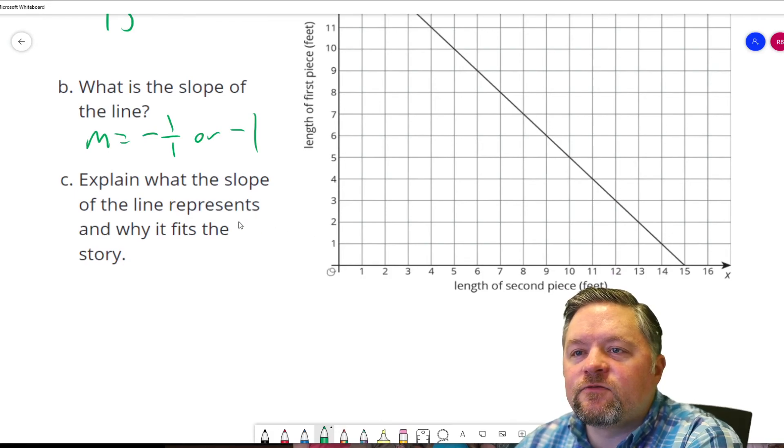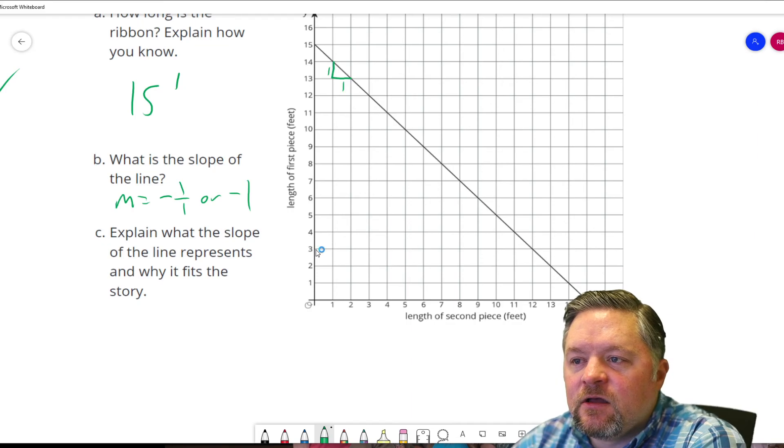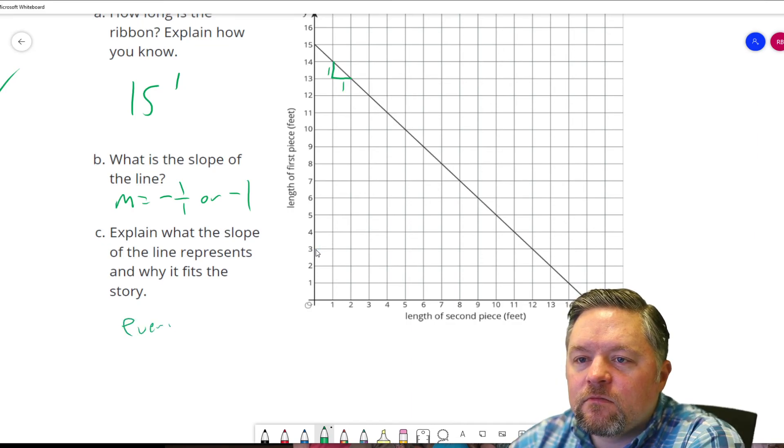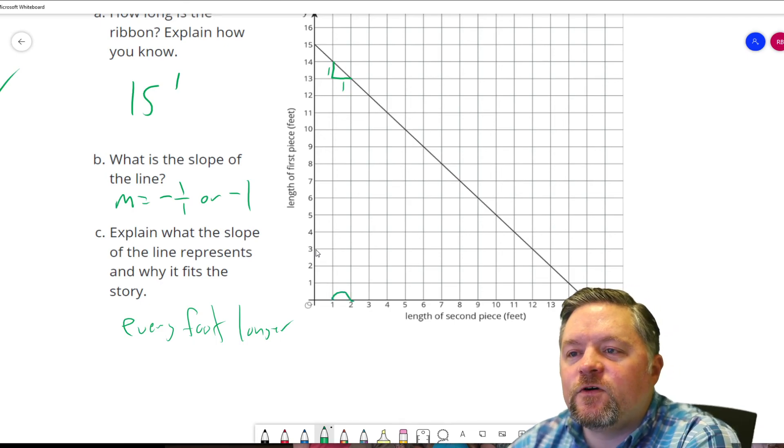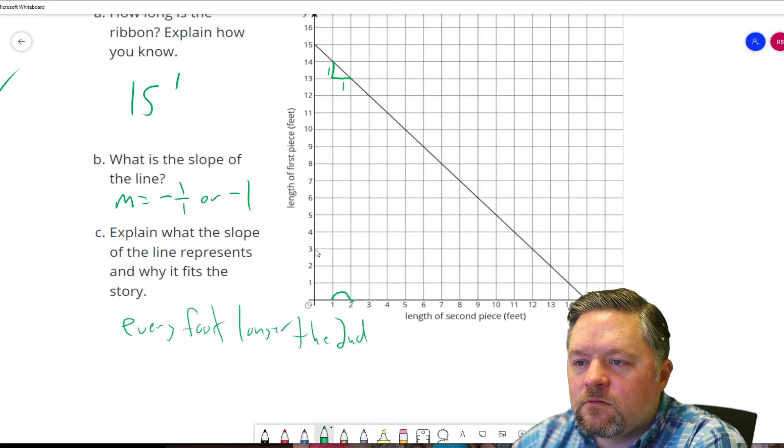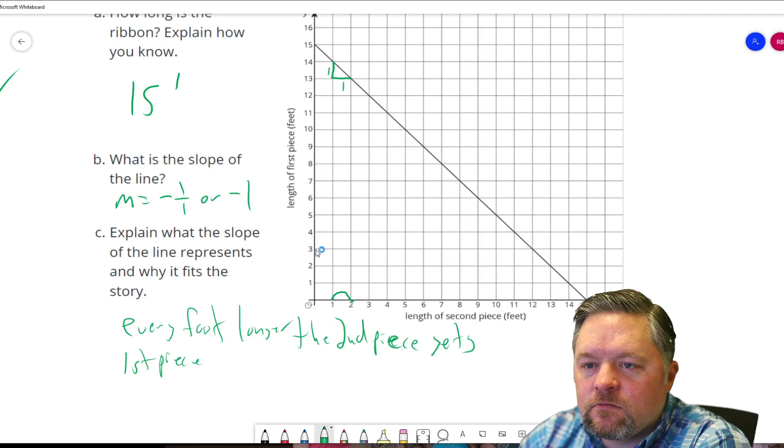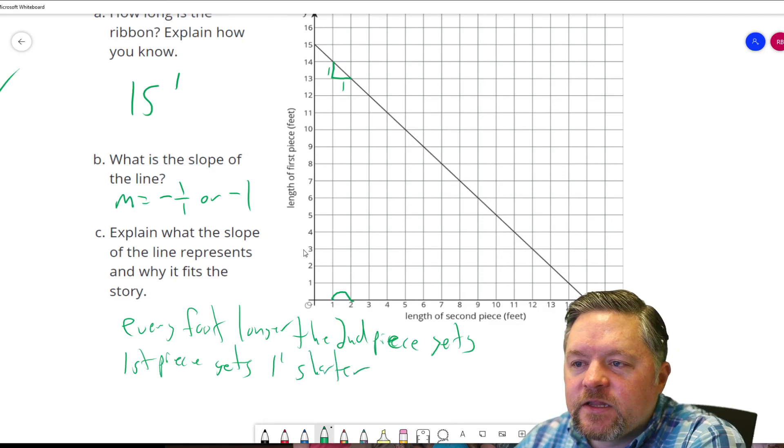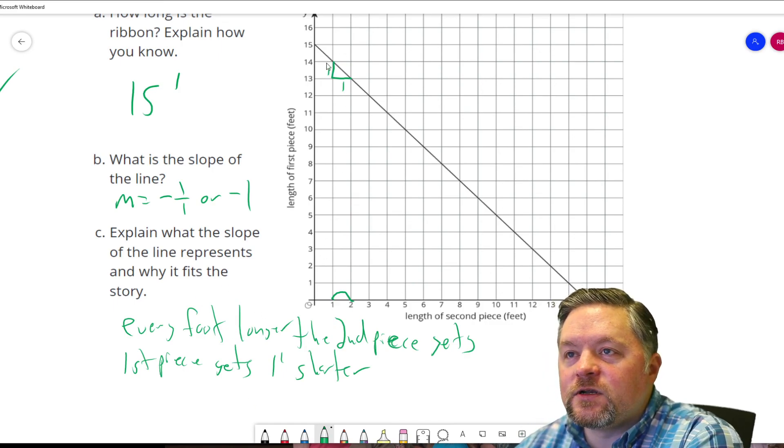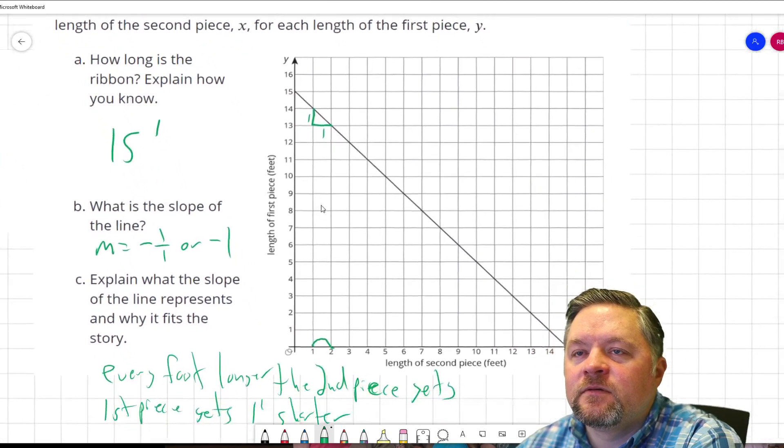Explain what the slope of the line represents and why it fits the story. So, the slope of the line being negative 1 means for every foot longer the second piece gets, the first piece gets negative 1. So, 1 foot shorter. Does that make sense? Yeah, because as one gets longer, the other one gets shorter, and they're both just the two ends of a piece of line cut in half. A piece of ribbon cut in half.